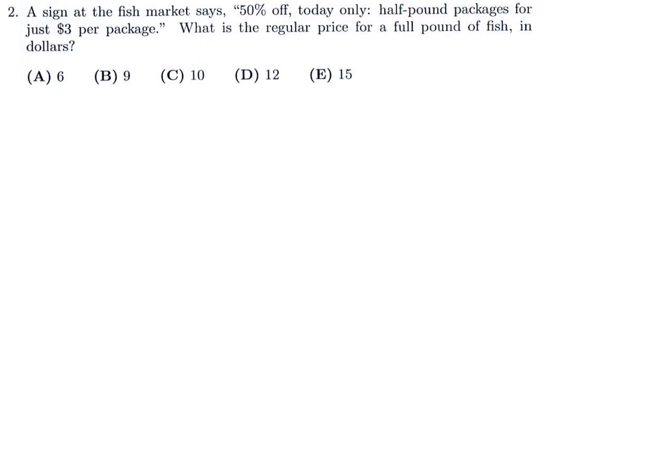A sign at the fish market says 50% off today only — half pound packages for just $3 per package. What is the regular price for a full pound of fish in dollars? Well, half a pound at the regular price was most likely $6, because the 50% off sale makes it $3.